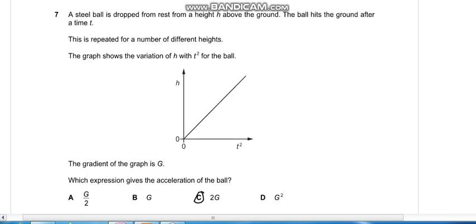Question seven: A steel ball is dropped from rest from a height h above the ground. The graph shows the variation of h with t² for the ball. The gradient of the graph is G. Which expression gives the acceleration of the ball? It was dropped from rest, so initial velocity is zero. Let's use the formula s = ut + half a t². So h = ut is zero, so half a t².